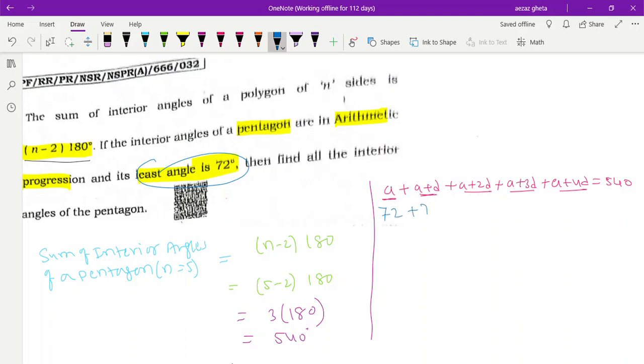They gave that the least angle is 72, so a is equal to 72. Before we write this, we'll add up all. How many a are there? Five a's. Plus how many d's? 1d, 2d, 3d, total 10d. This equals 540. Divided by 5 gives us a plus 2d equals 108.